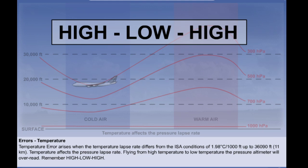Make a note that when flying from an area of high temperature to an area of low temperature, the pressure altimeter will overread or read high. Remember: high, low, high — or more dramatically, cold kills. When flying from an area of low temperature to an area of high temperature the reverse applies and the pressure altimeter will underread.